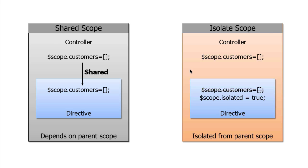With isolate scope, the controller still has the customers property, but it won't be shared down — there's a wall that blocks it. We can't access scope.customers in the directive. We can create our own properties in the directive, such as a custom isolated property, but the scope is completely isolated from the parent scope, and there's no way to throw something over the wall.